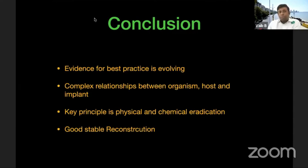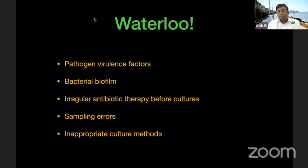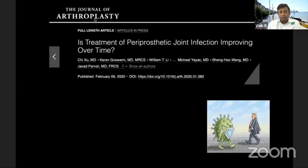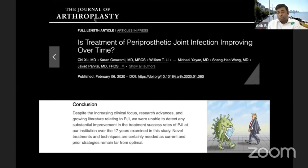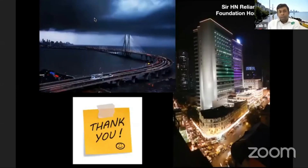In conclusion, evidence for best practices is still evolving. There is a complex relationship between organism, host, and implant. The key principle regardless of strategy is good physical and chemical eradication, followed by a stable reconstruction. The waterloo in this war is pathogen virulence and bacterial biofilm, which are beyond our control. Patients often receive irregular antibiotics from their GPs before cultures are taken, so we must avoid sampling errors and inappropriate culture methods. Parvisi, who has contributed enormously to periprosthetic infection research, recently asked: 'Have we improved?' — and the emphatic answer was no. We still have much more to do to win this war.